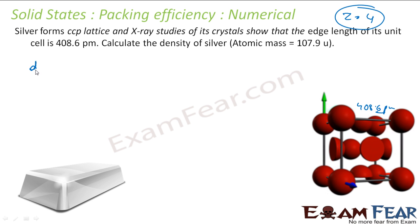So density - we have this formula: Density = ZM / (A³ × Na). So let's see if I have all the values. Z I know is 4.